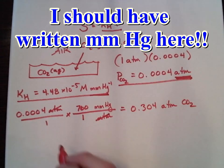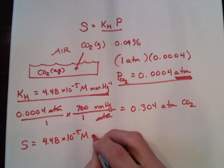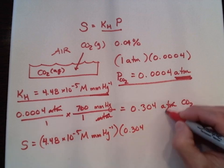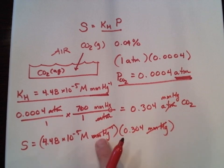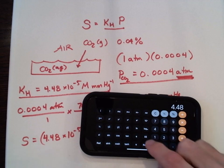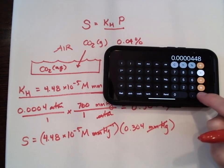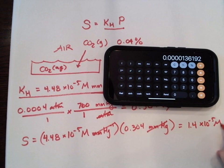Now I can plug both values into the equation. The solubility equals 4.48 times 10 to the negative 5th molar per millimeter of mercury, multiplied by 0.304 millimeters of mercury. The millimeters of mercury units cancel, leaving molar. Taking 4.48 times 10 to the negative 5th times 0.304 gives approximately 1.4 times 10 to the negative 5th molar carbon dioxide.